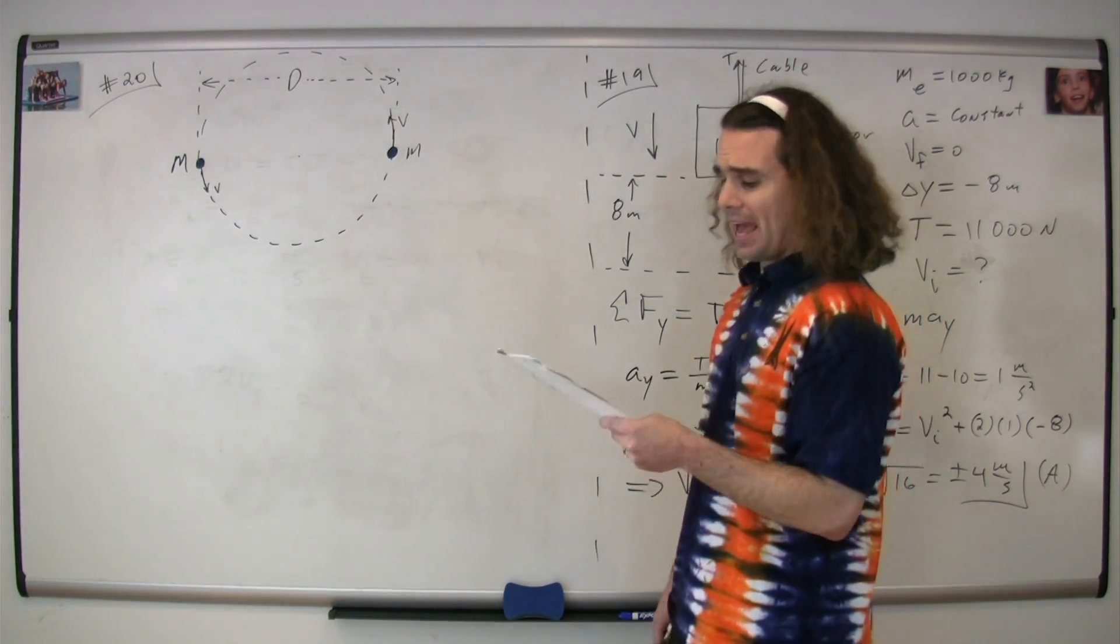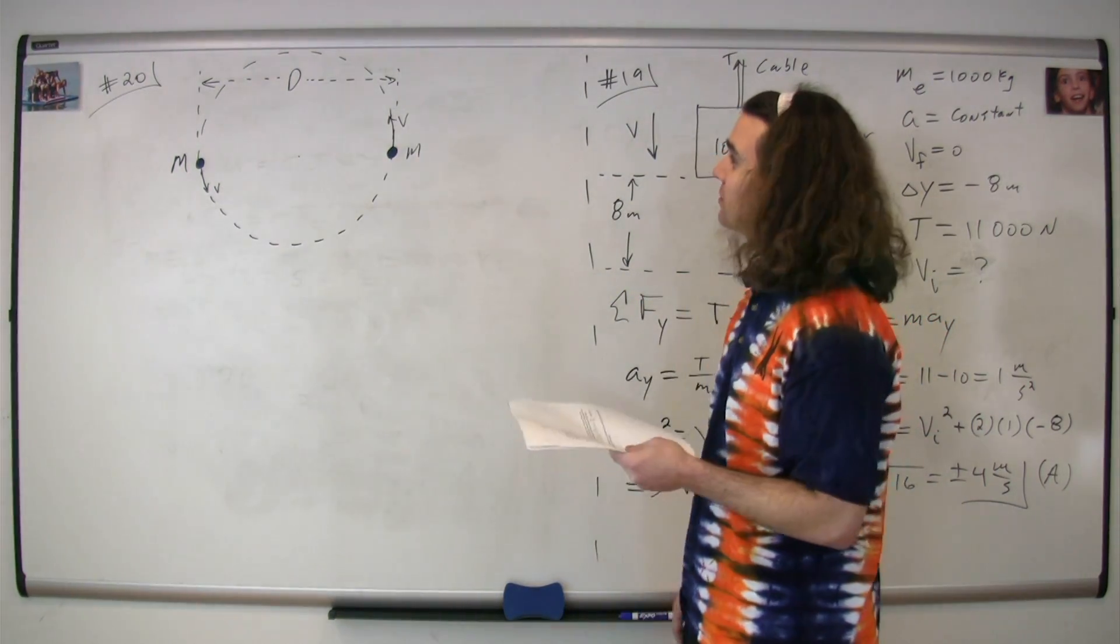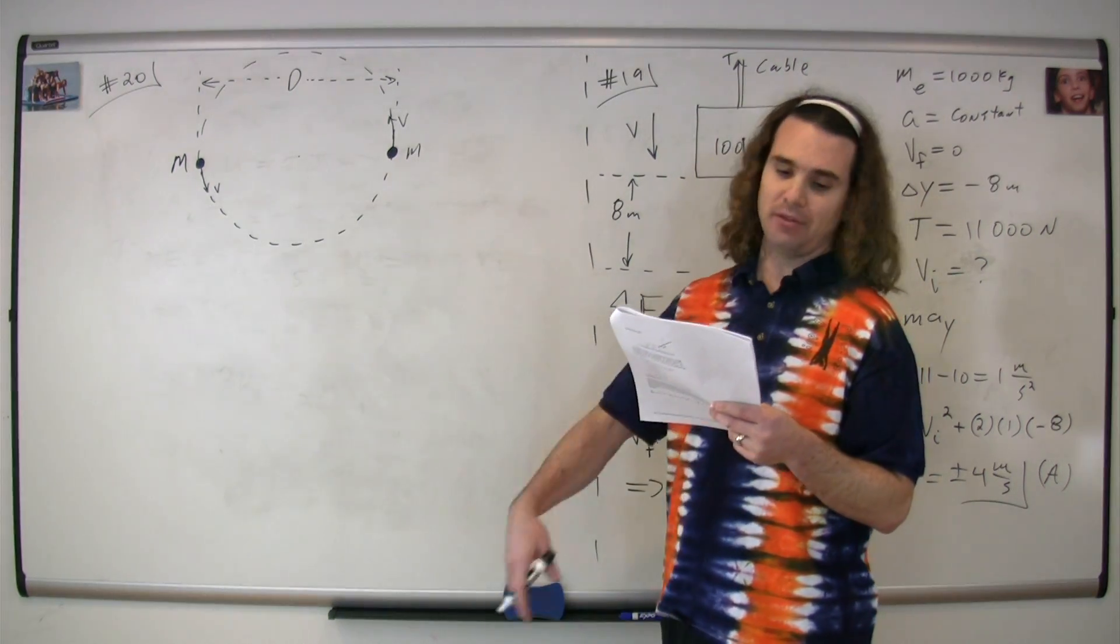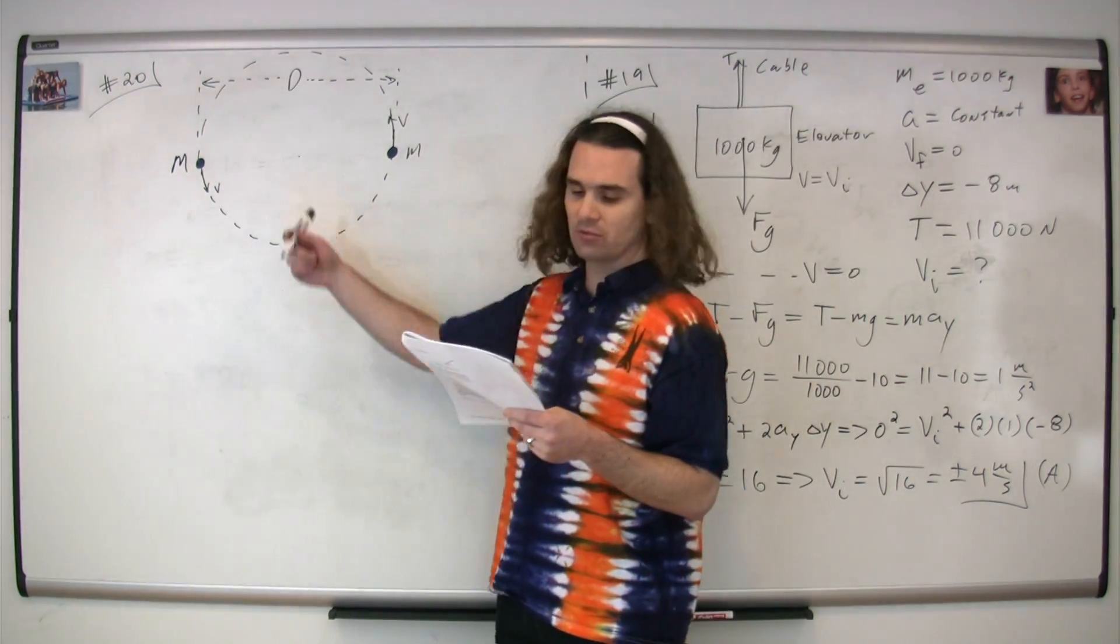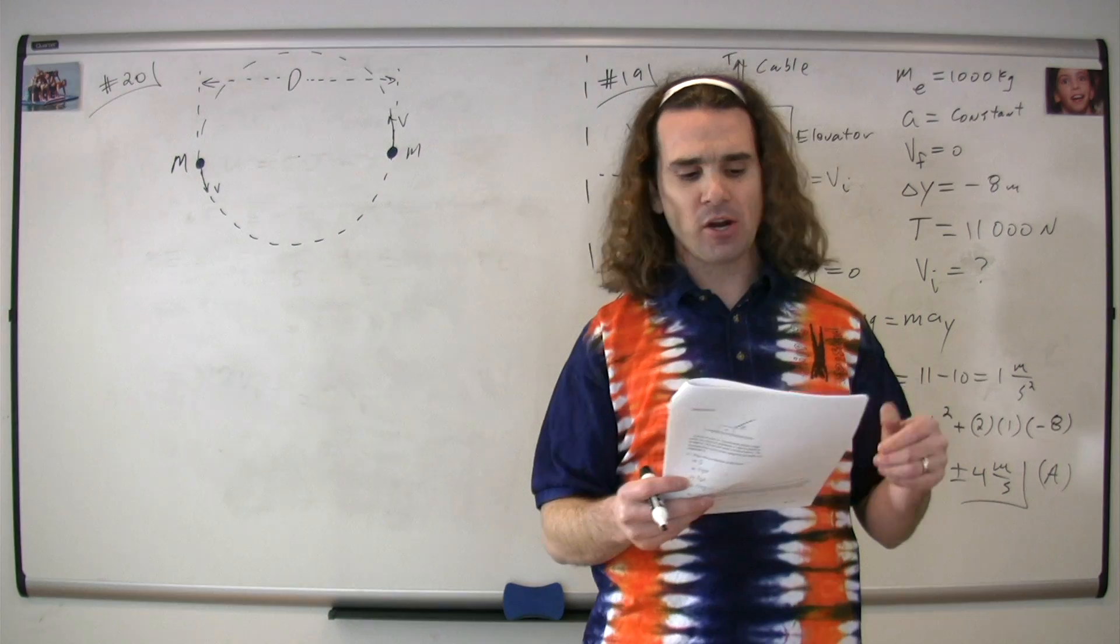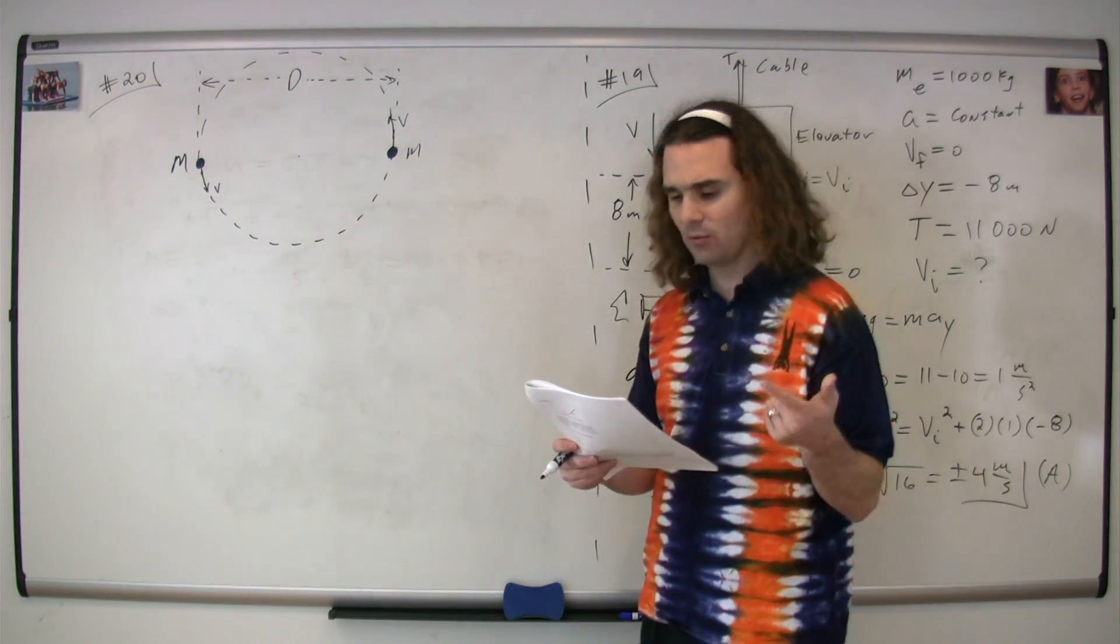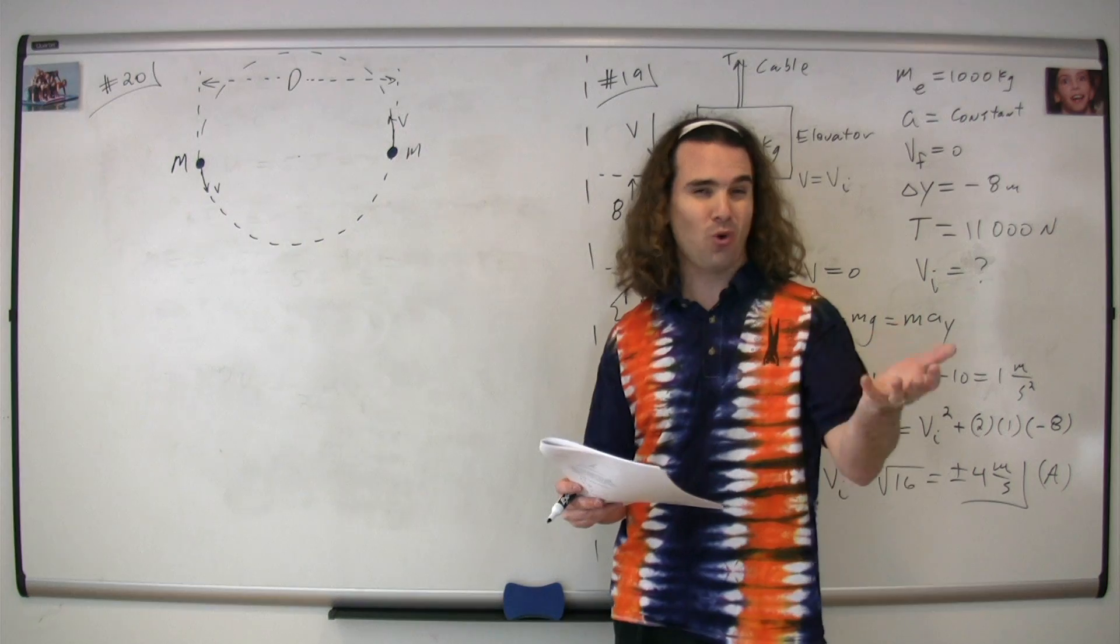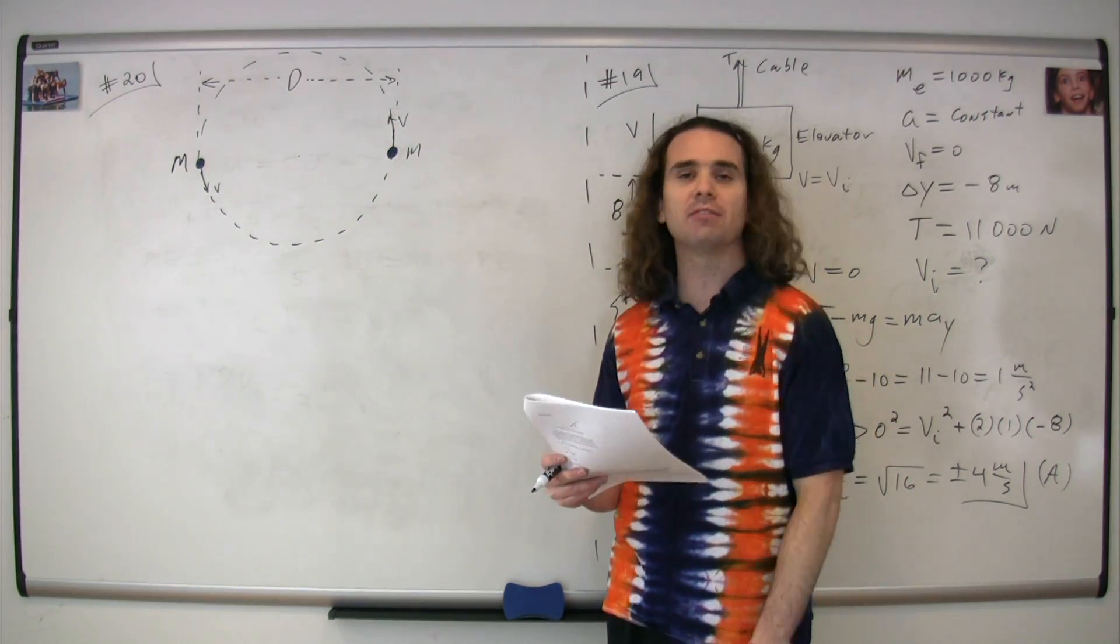Question 20: We have two identical stars located a distance capital D apart. They're moving in a circle around the center of mass, which is right between the two. We know the mass in each star, we know the velocity, we know the universal gravitational constant. The question is, which is a correct relationship amongst all of these variables?